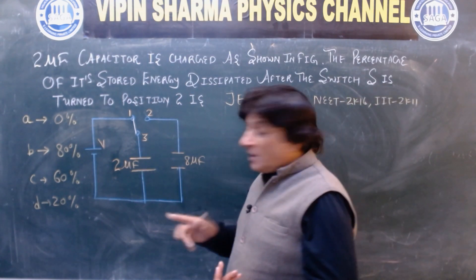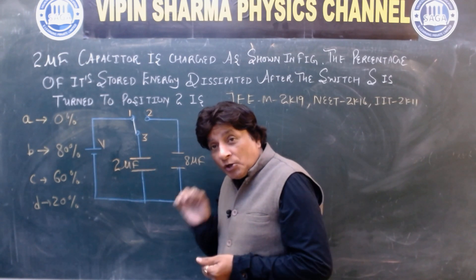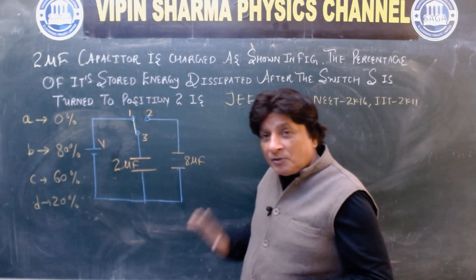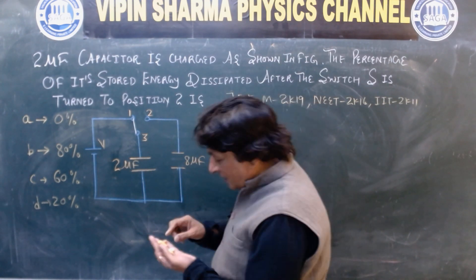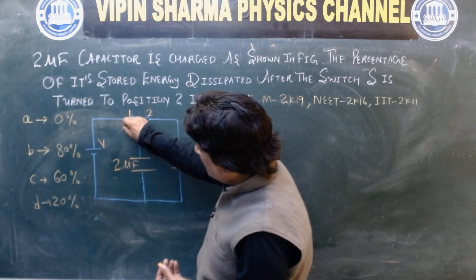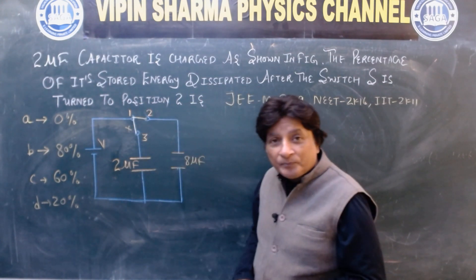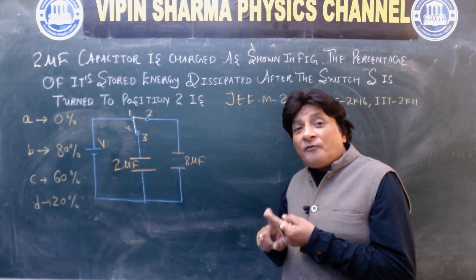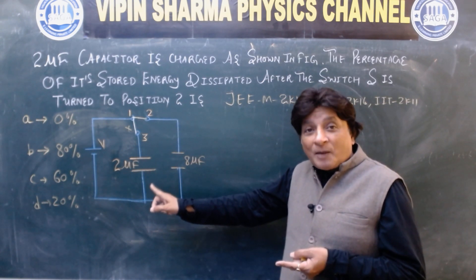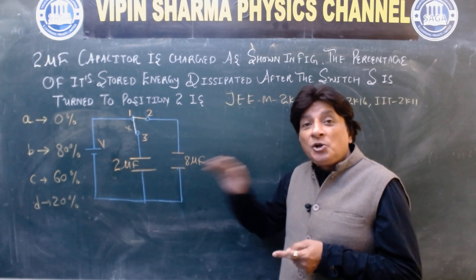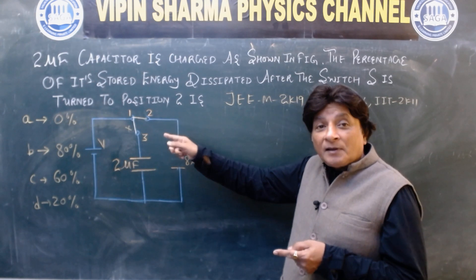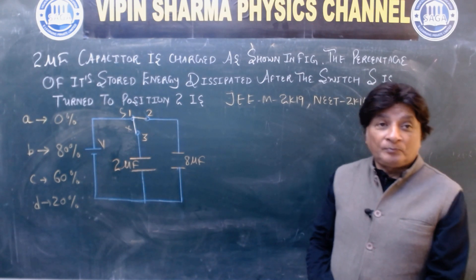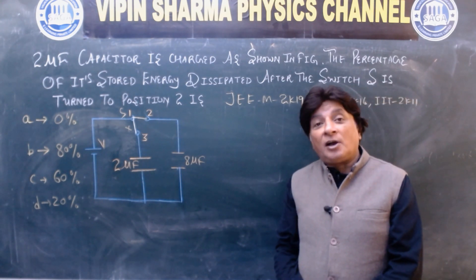We have two microfarad capacitors and we charge it. We charged it, then disconnect 1,3 and connect 1,2. The percentage of its energy, 2 microfarad capacitor ki, percentage of its energy dissipated after the switch S is turned to the position 2, means 1 or 2 ko humne connect kar diya.